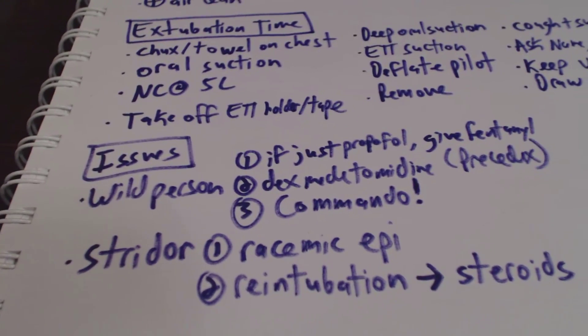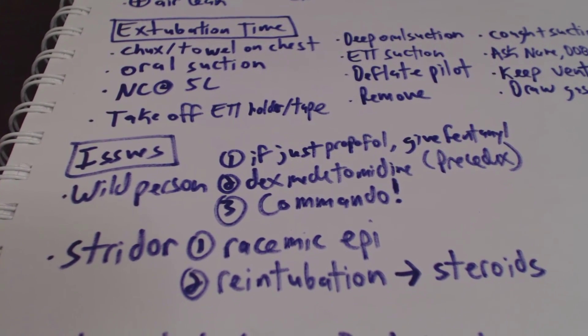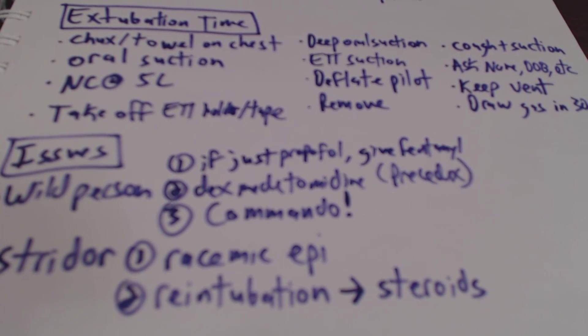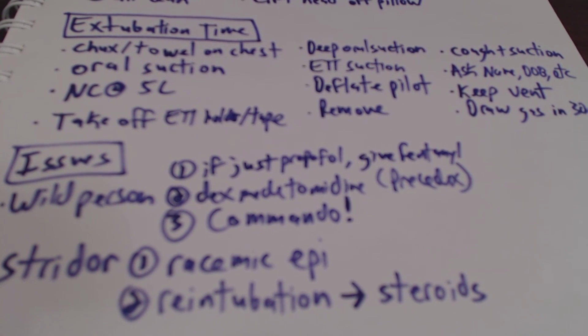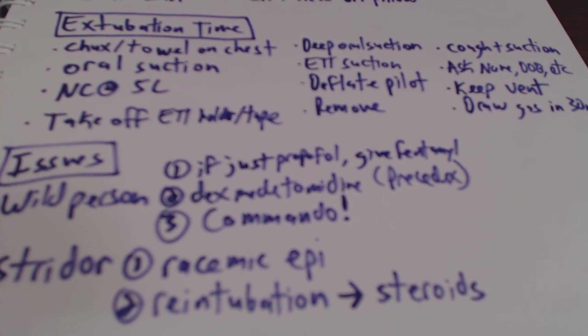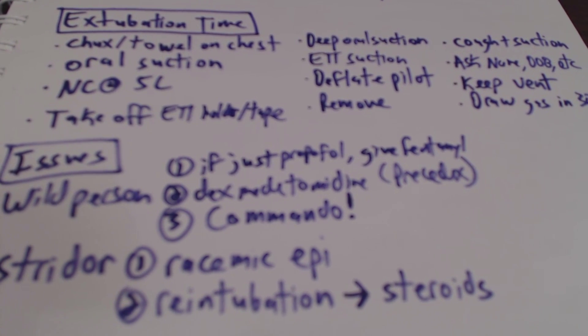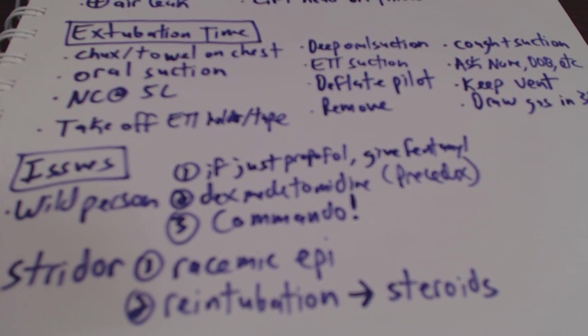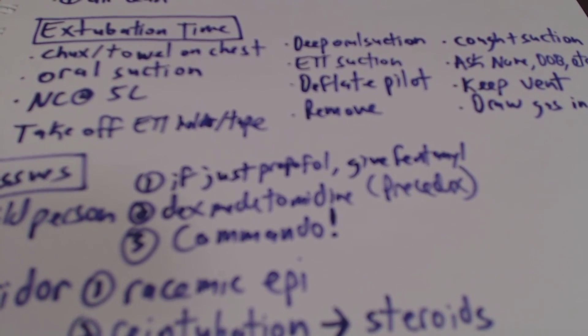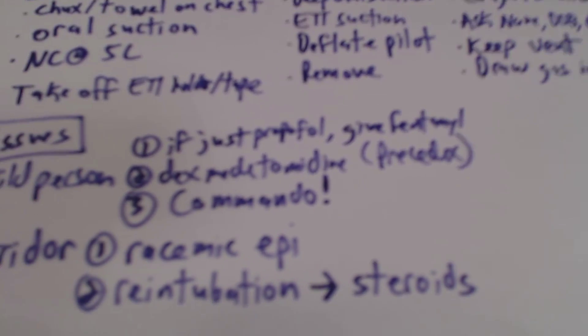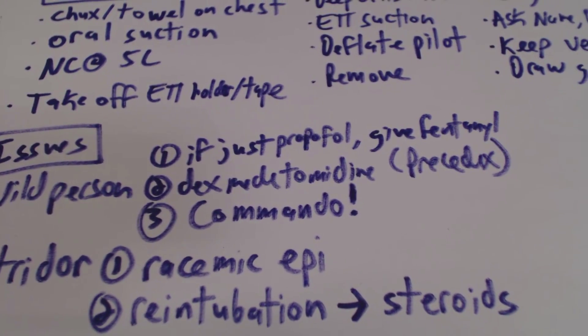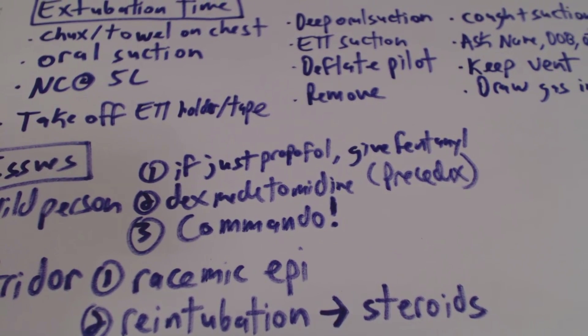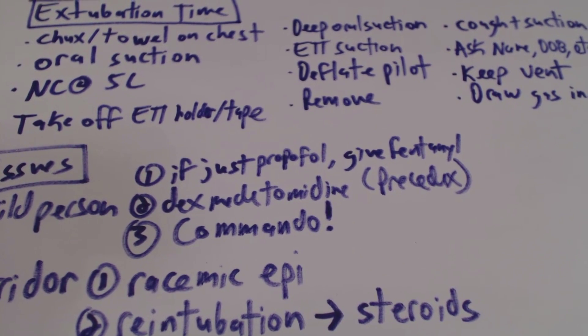Now, issues that we can have for endotracheal extubation is that if we have a wild person. So one of the things is that if the patient is just on propofol, it definitely helps sometimes to give them a little bit of fentanyl, some fentanyl pushes to keep the pain under control. Just because the propofol as a sedative hypnotic will kind of keep them under, but then it does nothing for them to control their pain. So if they're coming out of the haze and are in massive amounts of pain, it's not a very good recipe for waking up a happy camper. One of the things that we can also do is give dexmedetomidine or Precedex.